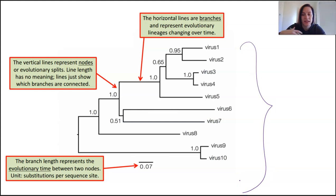In this case, the scale uses substitutions per sequence sites. They might be looking at those conserved regions, accumulating those genetic changes in those conserved regions.